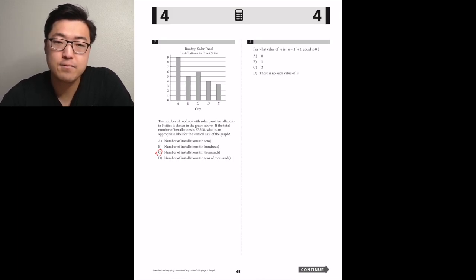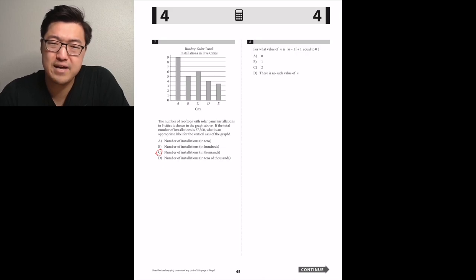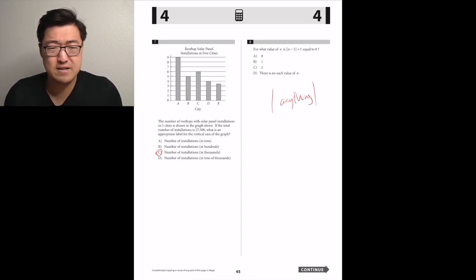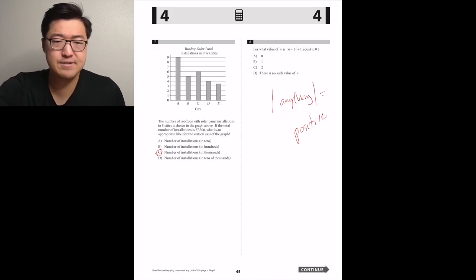The number of rooftops with solar panel installations in five cities is shown in the graph above. If the total number of installations is 27,500, what's the approximate label for the vertical axis? The first one's at 9, so I don't think it's 90,000. I don't think 900. C if I have to estimate.